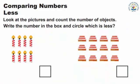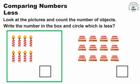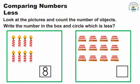Comparing numbers — less. Look at the pictures and count the number of objects, write the number in the box, and circle which is less. Now we will find out less. Count the candles first and write the number in the box. There are eight candles. Now let's count the cakes. How many cakes are there? Yes, there are twelve cakes. So which is less? You will circle which is less. Yes, eight is less than twelve.